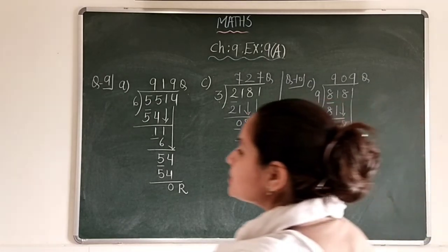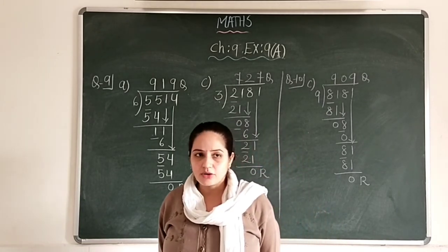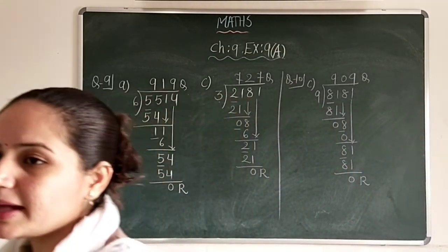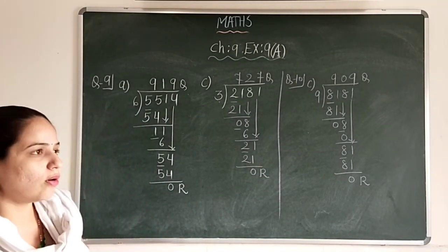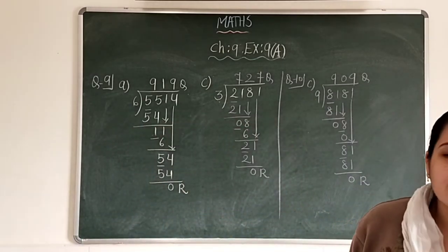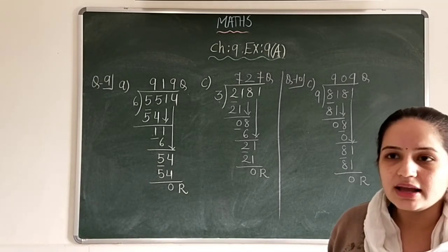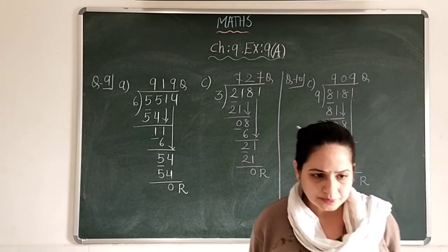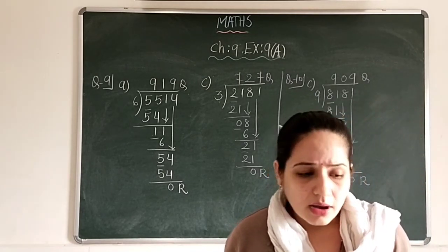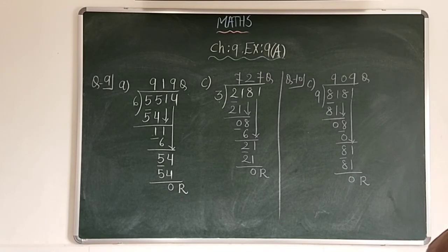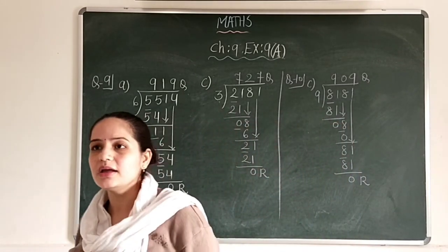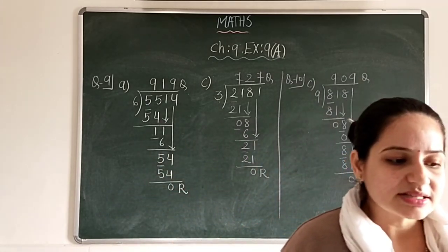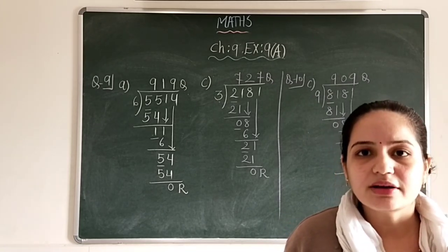Question numbers 11 to 15 are similar to questions 3 to 10. I am not going to do them now — you will do them in your fair notebook as homework on your own. How quickly you can perform division depends on how strong your tables are. Thank you very much for watching.